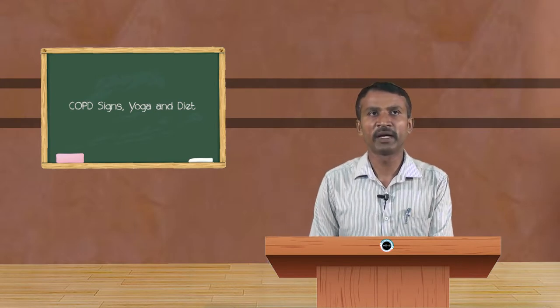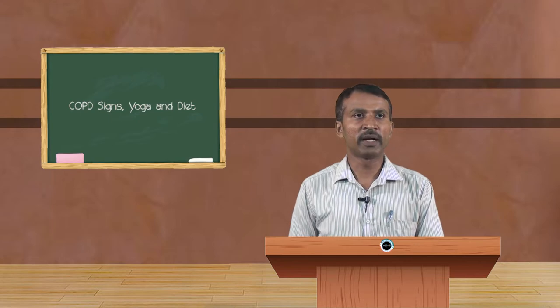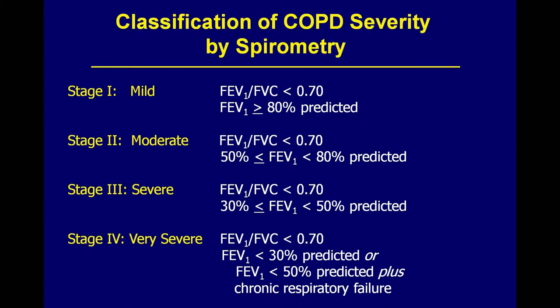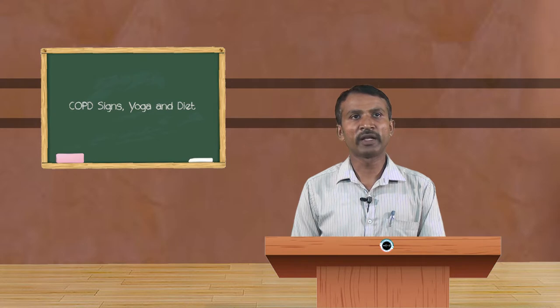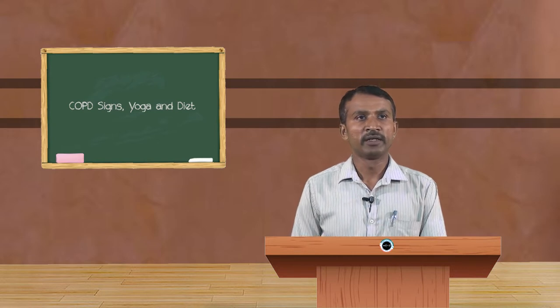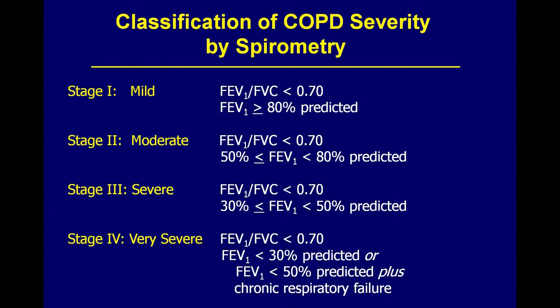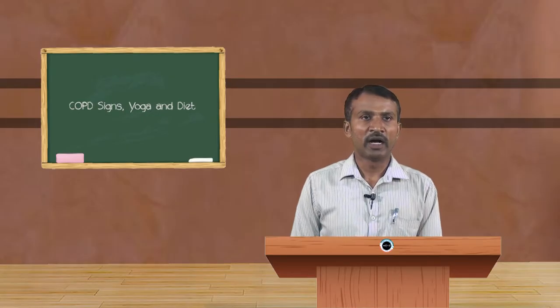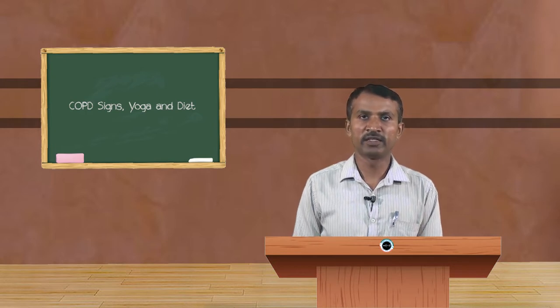Classification of COPD severity by spirometry: Stage 1 is mild, Stage 2 is moderate, Stage 3 is severe, and Stage 4 is very severe. In Stage 1, the forced expiratory value is always more than 80% predicted. In Stage 2 moderate, it is less than 50%. In Stage 3 severe, less than 30%. Stage 4 is below 10% and predicts chronic respiratory failure.